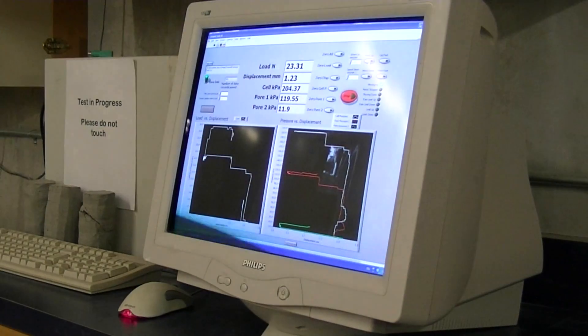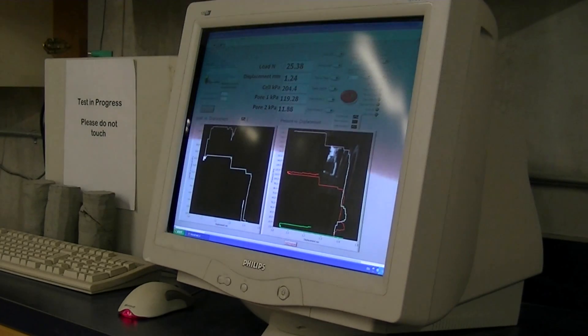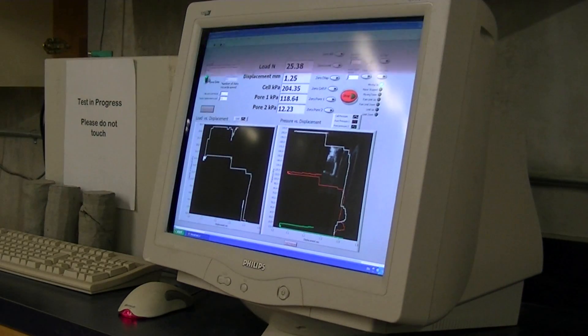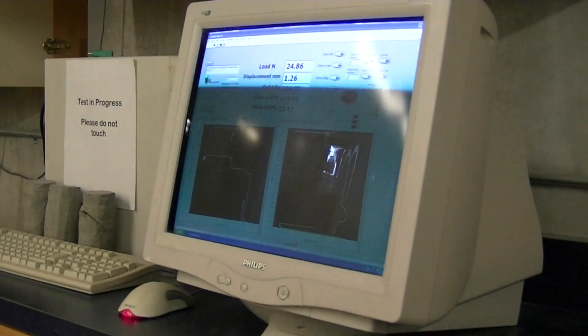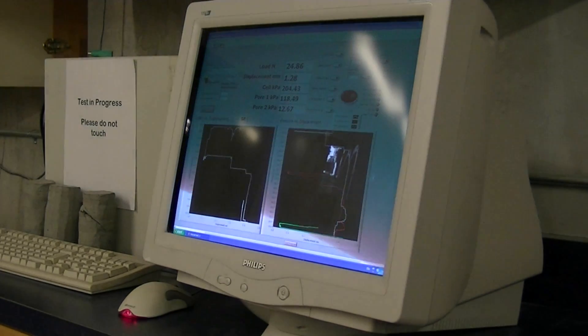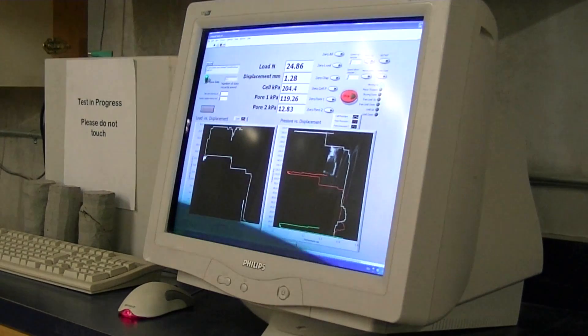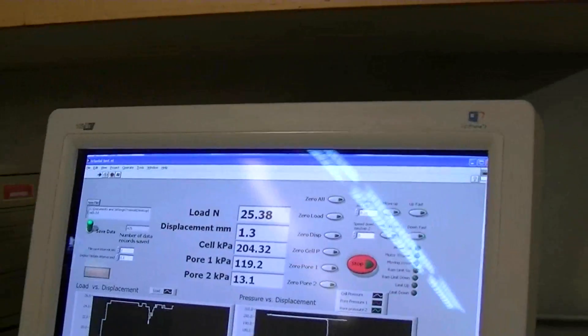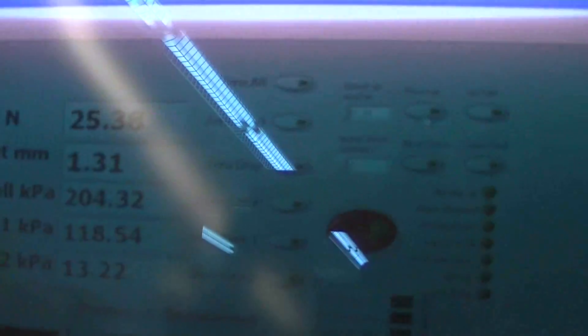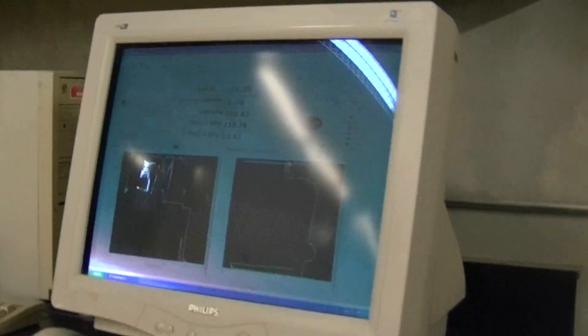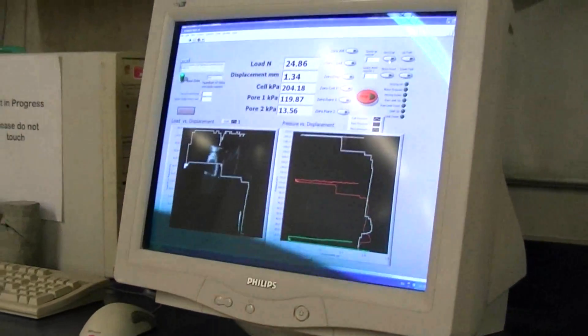We've begun displacing the sample on the cell upwards against the fixed top cap. Effectively, we've started the test. Currently, we're going at a rate of 0.25 millimeters per minute. We've specified that in the software.